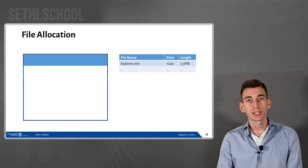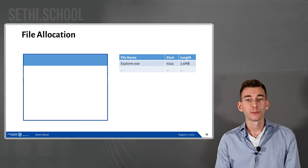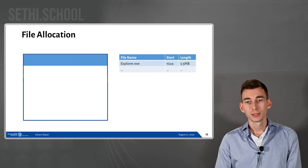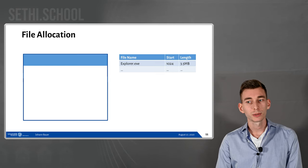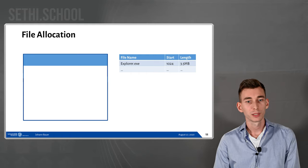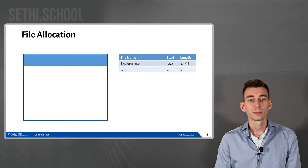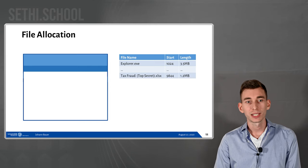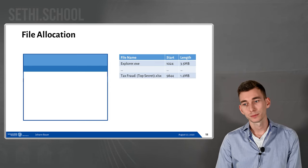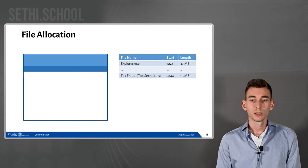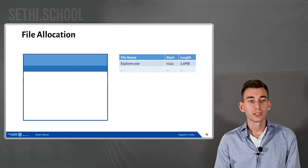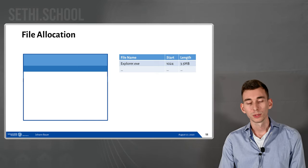Some background on file allocation: file systems have a file allocation table in which they store which file is where on the hard disk. For example, explorer.exe is at sector 1024 and is 3.5 megabytes long. If you create a new document, it's a new entry in the file allocation table and the data is stored on the hard disk. If you delete it, only the entry in the file allocation table is removed, so it's possible the data is still actually on the system — and you want to know about that.